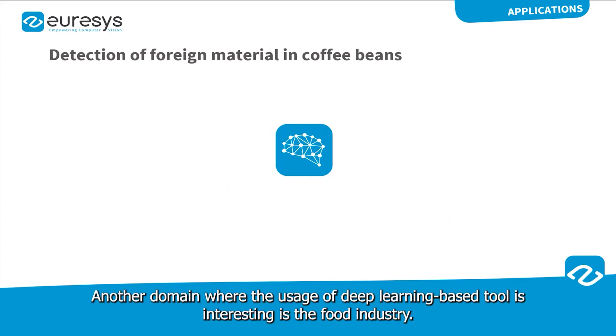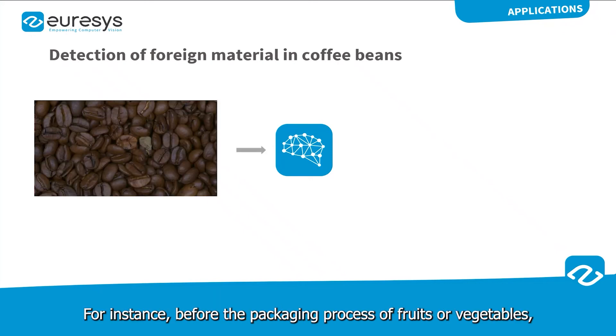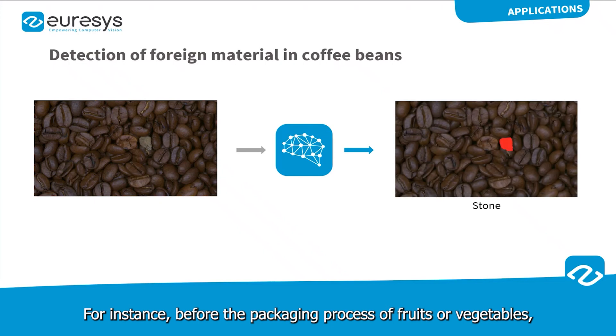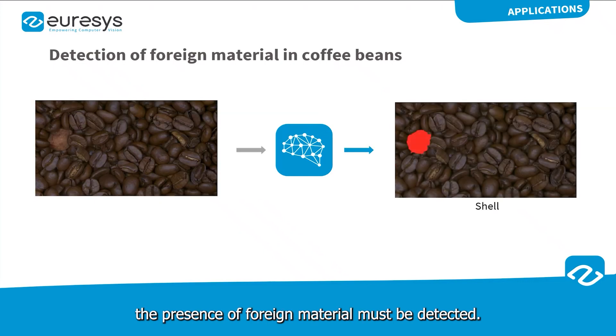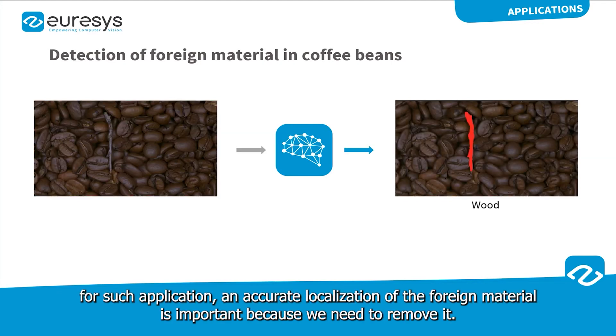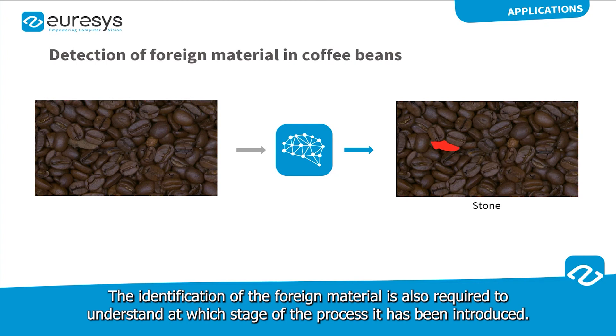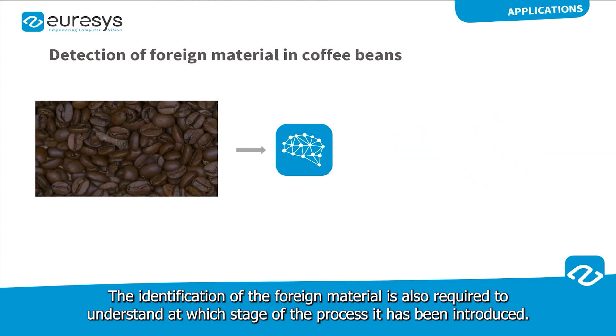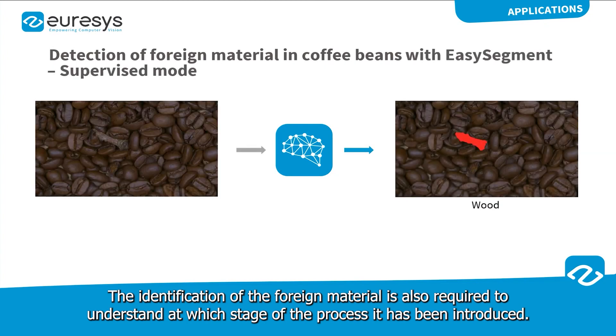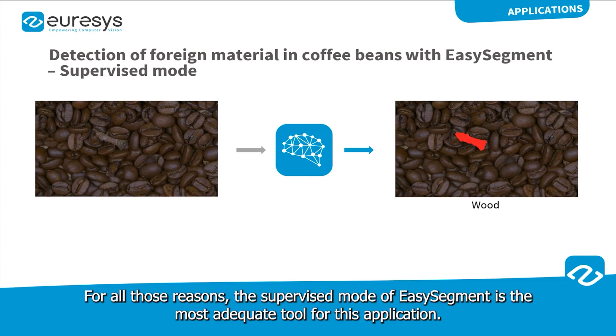Another domain where the usage of deep learning based tools is interesting is the food industry. For instance, before the packaging process of fruits or vegetables, the presence of foreign material must be detected. For such applications, an accurate localization of the foreign material is important because we need to remove it. The identification of the foreign material is also required to understand at which stage of the process it has been introduced. For all those reasons, the supervised mode of EasySegment is the most adequate tool for this application.